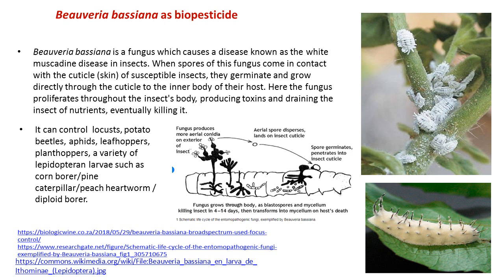This particular Beauveria bassiana can control various insect pests such as beetles, aphids, leafhoppers, plant hoppers, and many varieties of lepidopteran larvae, corn borer, pine caterpillar, peach budworm, and many other borers. Because of this property of getting parasitized inside the larvae or on insects, such property has been exploited for the production of biopesticide to kill various pests.